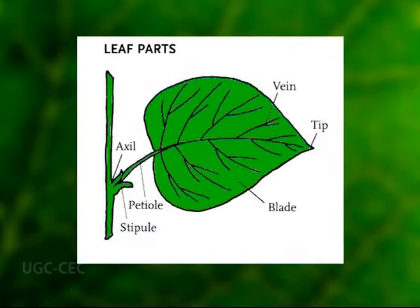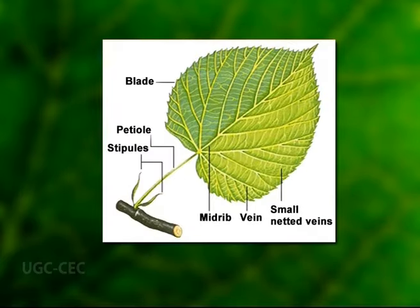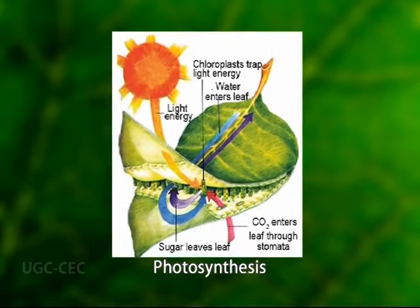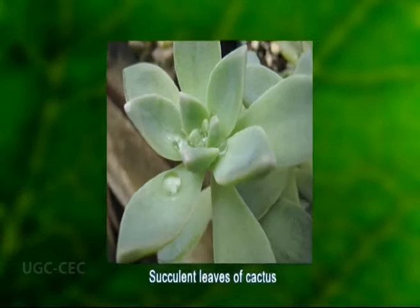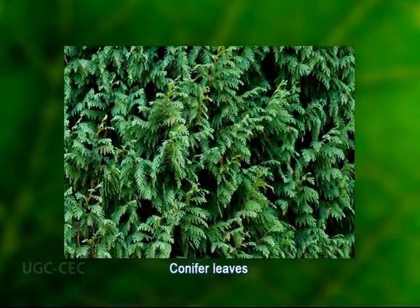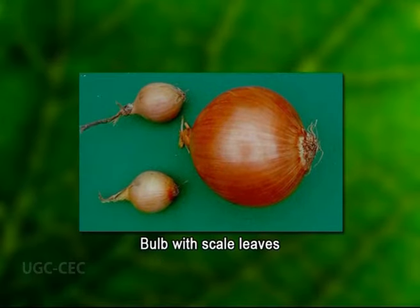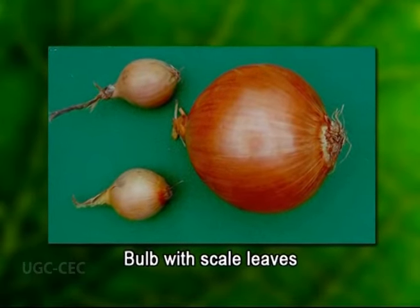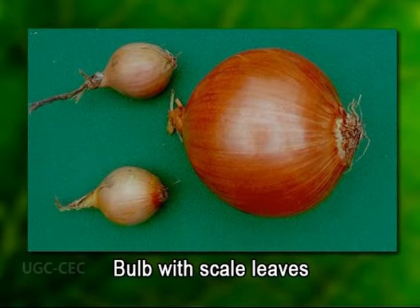A leaf is an organ of a vascular plant. It is a thin, flattened organ, borne above ground and specialized for photosynthesis. But many types of leaves are adapted in ways almost unrecognizable in those terms — not flat such as many succulent leaves and conifers, and not above ground such as bulb scales or without photosynthetic function.